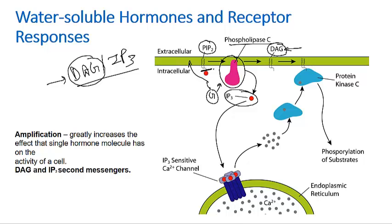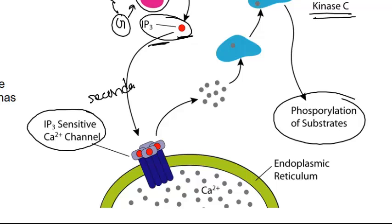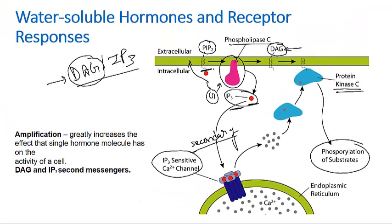Phospholipase C converts the membrane phospholipids into DAG and IP3. DAG remains attached to the cell membrane and activates Protein Kinase C, which, as a kinase, can phosphorylate other substrates inside the cell. Meanwhile, IP3 is released after cleavage and causes the endoplasmic reticulum to release calcium ions into the cytosol. IP3 acts like another secondary messenger, activating calcium channels embedded in the ER membrane so that calcium passes from the ER lumen into the cytosol.